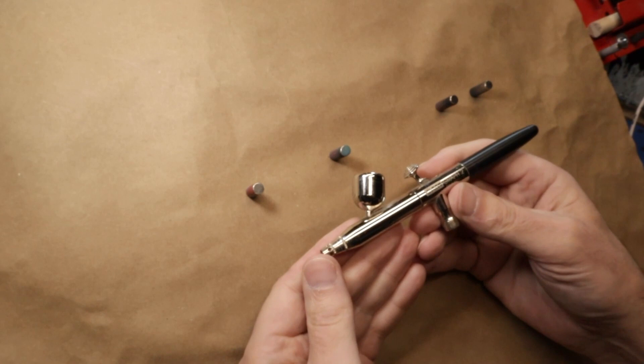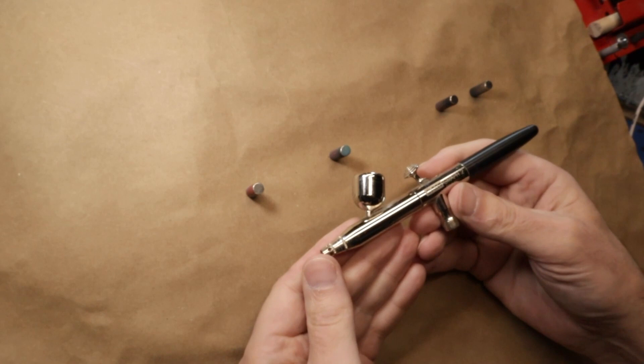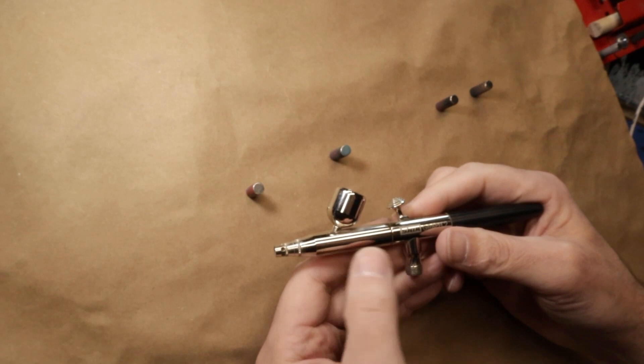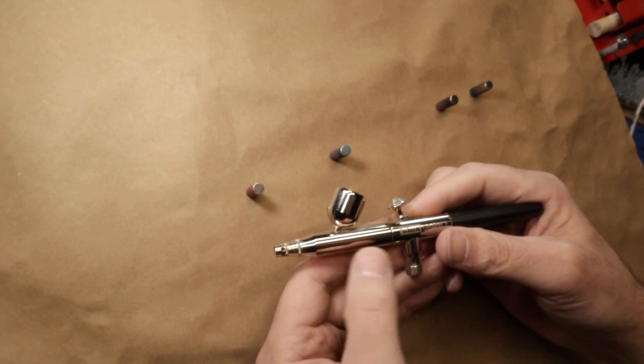Before I get into which airbrush would be the best for you, it might help to go over how these brushes work a little bit. The way that they work is pretty much the same as far as the operation of the airbrush. What really is different is how that paint feeds onto the needle of the brush. Basically inside of this airbrush is a needle and there is usually a paint reservoir that's attached to that airbrush somewhere.